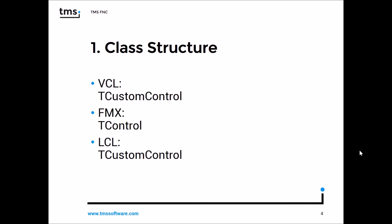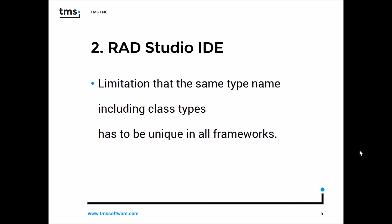In the VCL, all controls are derived from TCustomControl. In FireMonkey it's TControl, and in Lazarus it's TCustomControl again — though TCustomControl in VCL looks a little different from the one in Lazarus. Also, in RAD Studio, the same type name must be unique across all frameworks, so a component called TButton in VCL can't share that name with TButton in FireMonkey — it must be in a different namespace or unit.